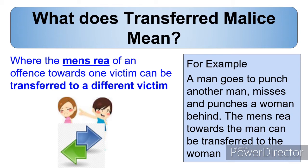First of all, what does transferred malice mean? Well, really what we're talking about here is when the mens rea of an offence directed at one victim is transferred to a different victim. So it's a situation where you might go to punch somebody and you miss them but hit somebody behind them. Your mens rea for the person you intended to hit can be transferred to the person you actually hit.